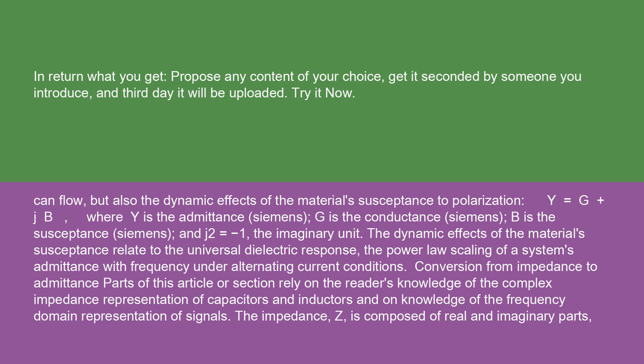Y equals G plus jB, where Y is the admittance in Siemens, G is the conductance in Siemens, B is the susceptance in Siemens, and j² equals minus 1, the imaginary unit.